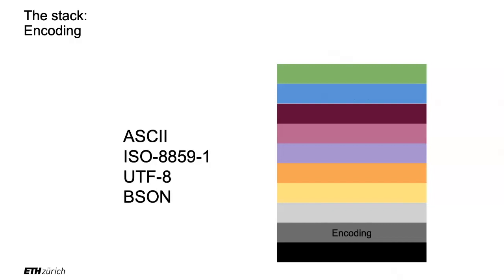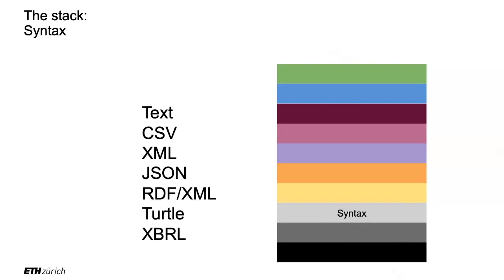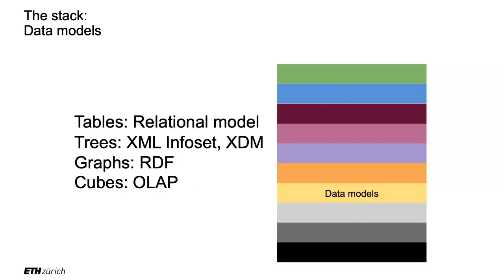Then we'll see how to encode the data — ASCII, UTF-8, BSON (a binary version of JSON), and so on. We'll look at syntax. If you store your data in a data lake, you need syntax: XML, JSON, YAML, but there are others like Turtle, RDF, XBRL. So you can store tables, cubes, trees, and graphs using these syntaxes — and that's basically what you put in your data lake.